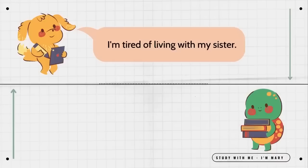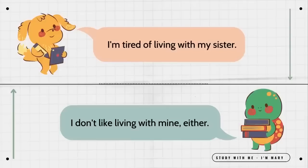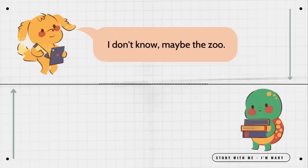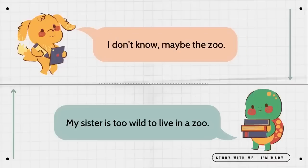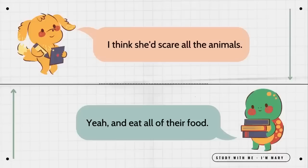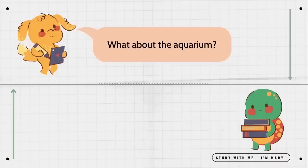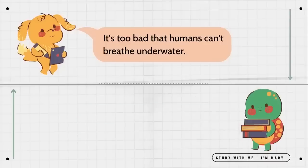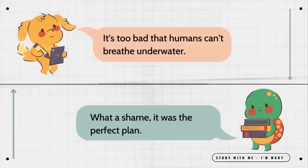I'm tired of living with my sister. I don't like living with mine either. There should be a place to send annoying siblings. What kind of place? I don't know. Maybe the zoo. My sister is too wild to live in a zoo. I think she'd scare all the animals. Yeah, and eat all of their food. What about the aquarium? I guess the shark tank would be a good place. It's too bad that humans can't breathe underwater. What a shame. It was the perfect plan.